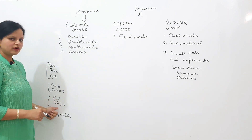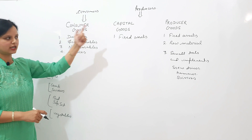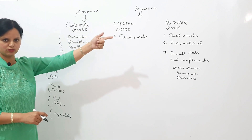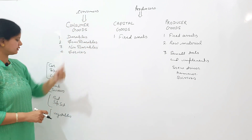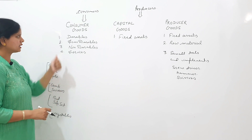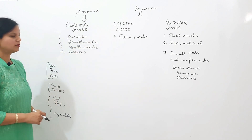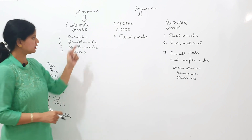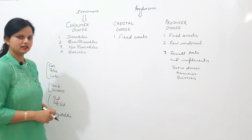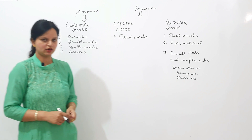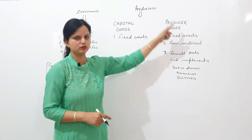Bed and sofa set: whether a bed or sofa set is a consumer good, capital good, or producer good depends on the end user. If bed and sofa set are purchased by a consumer, then it is a consumer good. And if bed and sofa set are purchased by a hotel or restaurant, then it is a capital good and a producer good too.